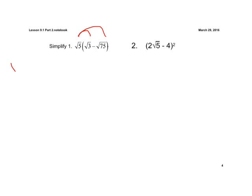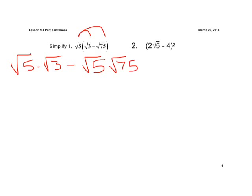So when we do that, if we write this out, we have the square root of 5 times the square root of 3, minus the square root of 5 times the square root of 75.